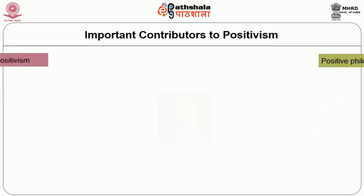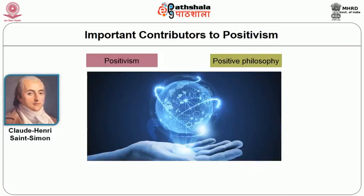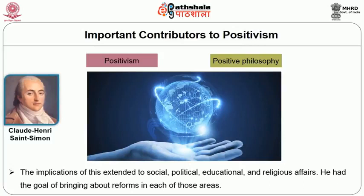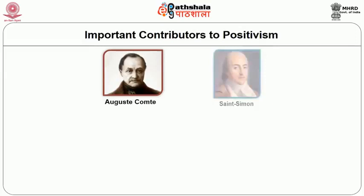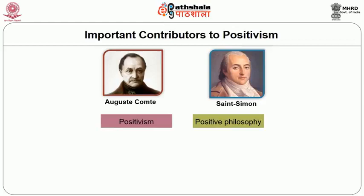The terms Positivism and Positive Philosophy were introduced by the French philosopher Claude Henry Saint-Simon as a reference to a scientific approach to the world. For Saint-Simon, the implications of this extended to social, political, educational, and religious affairs, and he had the goal of bringing about reforms in each of those areas. French philosopher Auguste Comte — for seven years a student and collaborator of Saint-Simon — popularized and systematized the term Positivism and Positive Philosophy.